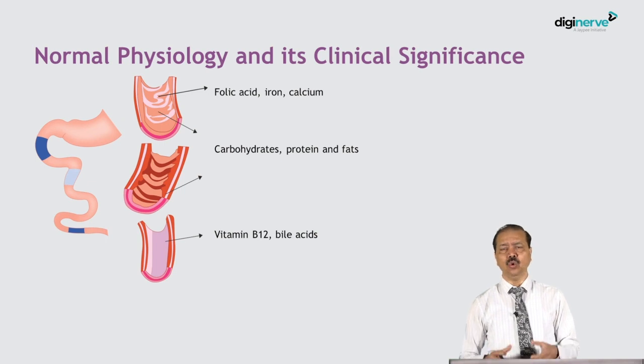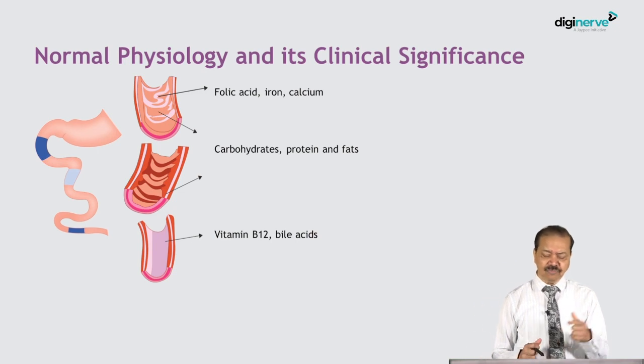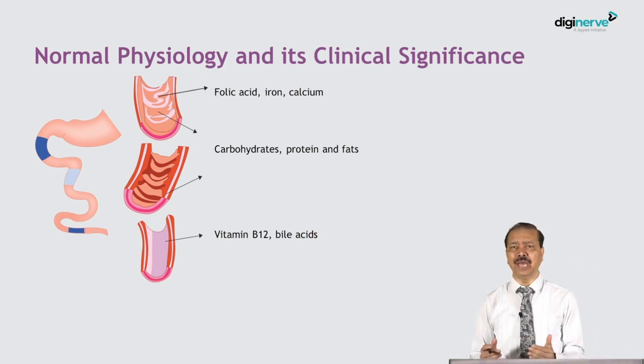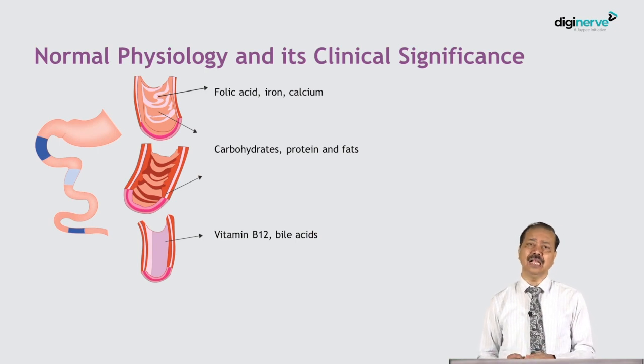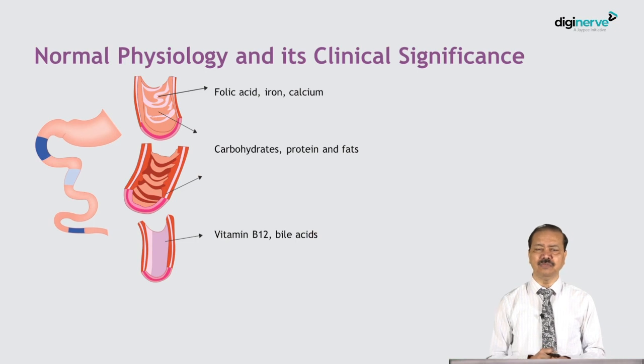Clinically, we can determine whether there is only duodenal involvement or additional jejunal and ileal involvement. If the patient has malabsorption of iron, calcium, and folic acid — as in this patient — that points to duodenal involvement. The mnemonic is FCI (Food Corporation of India): folic acid, calcium, and iron are absorbed from the duodenum.